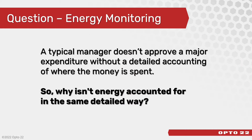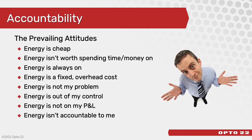I think we can agree on the following statement: a typical manager doesn't approve a major expenditure without a detailed accounting of where the money is spent. So the question is, why isn't energy accounted for in the same detailed way? In industrial facilities on the operational technology side, energy is often considered overhead. The plant manager, technician, or automation engineer is not responsible for the energy expenditure in their operation. This is not anybody's fault — this is just how it is, and what I'm hoping to do is change that mindset.